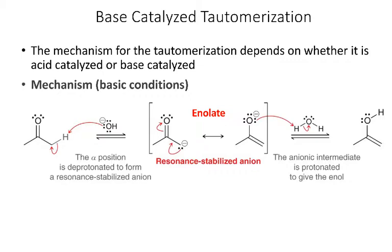In the base-catalyzed tautomerization, the same two steps occur in the opposite order. First, we deprotonate the alpha carbon to give an anion that is resonance-stabilized via an allylic lone pair — the lone pair forms a pi bond, and the pi bond on oxygen becomes a lone pair on oxygen. The second step is protonation of the oxygen. So in acid catalysis: protonate oxygen first, then deprotonate carbon. In base catalysis: deprotonate carbon first, then protonate oxygen.